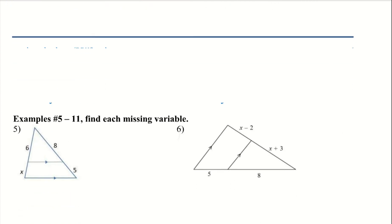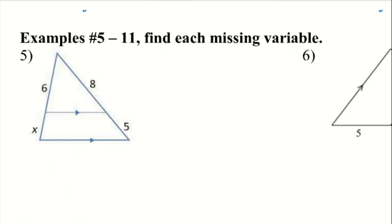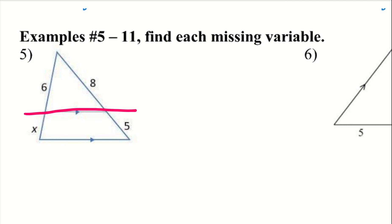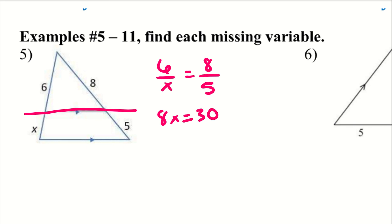Let's try a couple of examples. Example 5 — find the missing variable. I like to just draw a line over the parallel line, and now I have two sets of fractions: 6 over x equals 8 over 5. So now I have 8x equal to 30. Divide by 8, I get 3.75.